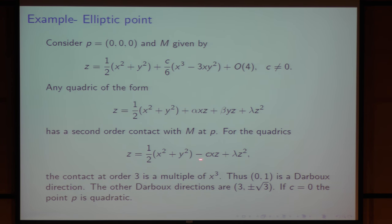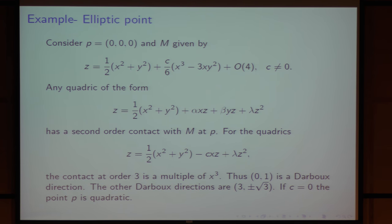Any quadric of this form will have second-order contact. But if you choose alpha equal to minus C, beta equal to zero, and lambda arbitrary, then the contact at P is a multiple of x cubed. So we conclude that the direction (0,1) is a Darboux direction, and similarly we can obtain the other Darboux directions. C equals zero means that the point is quadratic.